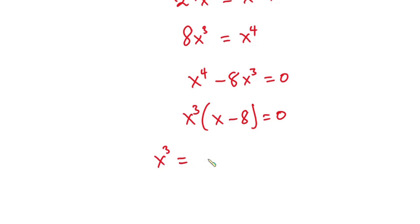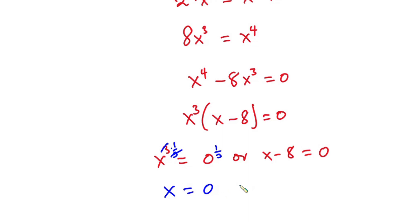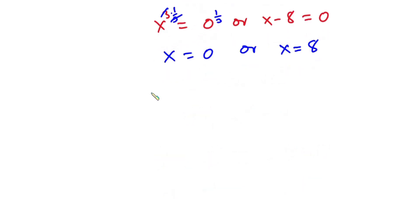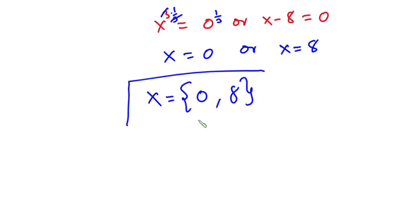From the factored form, either x cubed equals zero or x minus 8 equals zero. Raising each side of the first equation to the power 1/3, the cube cancels and we get x equals zero. From the second, making x the subject gives x equals 8. So the final answers are x equals zero or x equals 8.